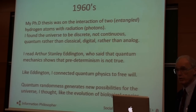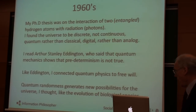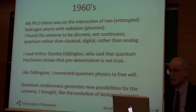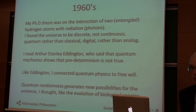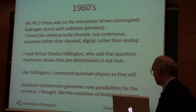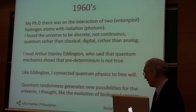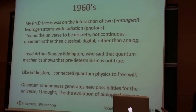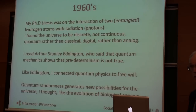I read Arthur Stanley Eddington, especially Nature of the Physical World, and he said that quantum mechanics had now shown that predetermination — predeterminism, the old idea — is simply not true. And like Eddington, I connected quantum physics to free will. Quantum randomness, I thought, generates new possibilities for the universe, just like it generates new possibilities for the evolution of biological species.